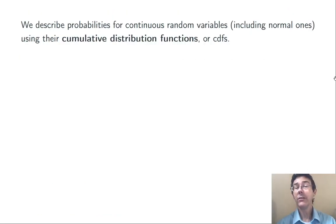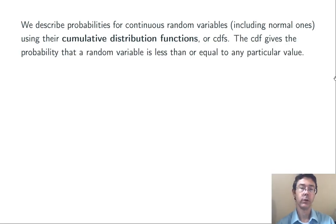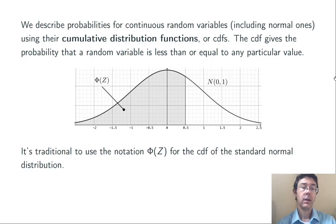The easiest and most common way to describe probabilities for continuous random variables, including the standard normal, is using cumulative distribution functions, or CDFs for short. The CDF gives you the probability that a random variable comes out to be less than or equal to any particular given value. With the standard normal distribution, we use the notation capital Φ(z) for the CDF.